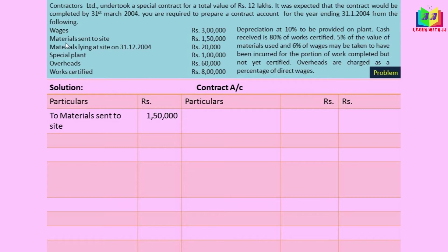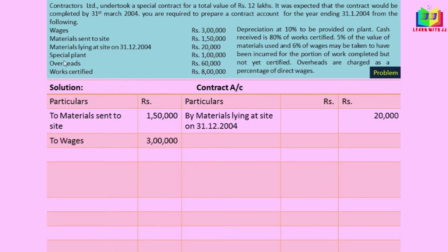First, material sent to site is 1 lakh 50,000 written on the debit side, and materials lying at site on 31/12 is the closing balance of materials, so we'll write it on the credit side. Next we'll write wages 3 lakh on the debit side, then special plant on the debit side, and overheads of 60,000 on the debit side.